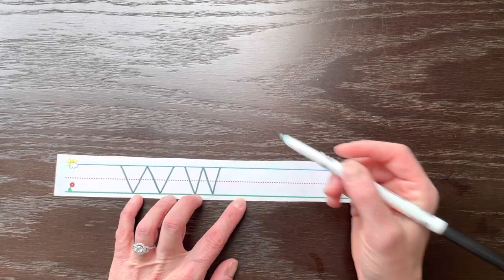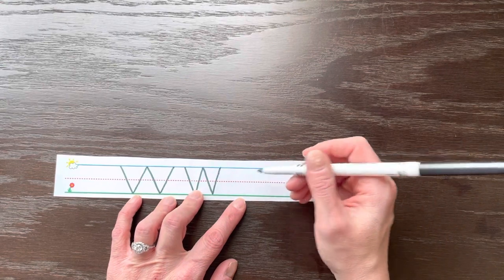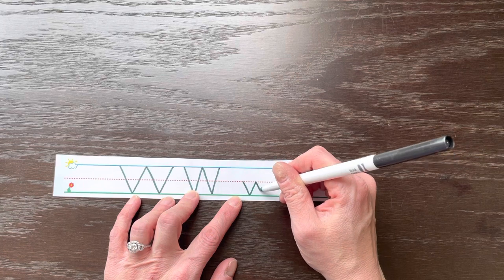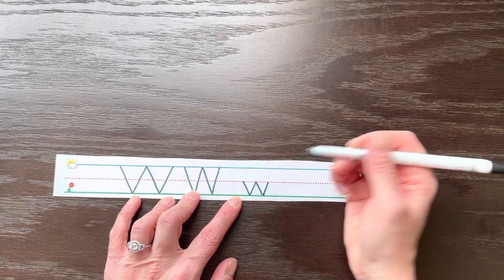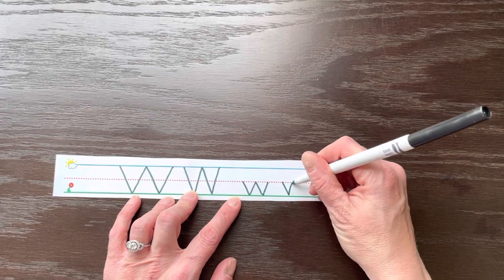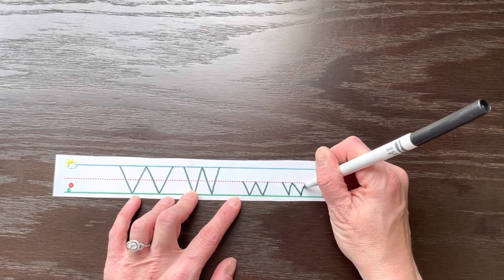Lowercase w you're going to start at the dotted line and do the same thing. So slide, touch the ground, climb back to the middle, slide, touch the ground, climb back to the middle. And one more time, slide, touch the ground, climb the mountain, slide, touch the ground, climb the mountain.